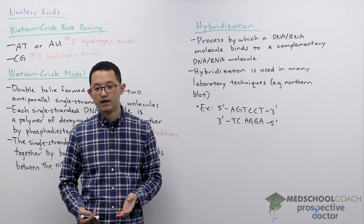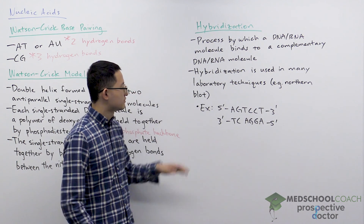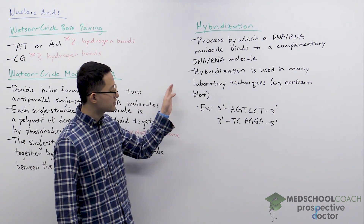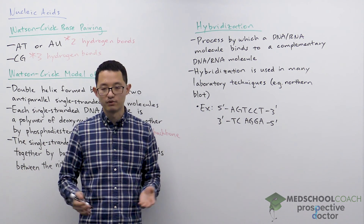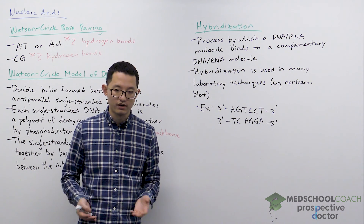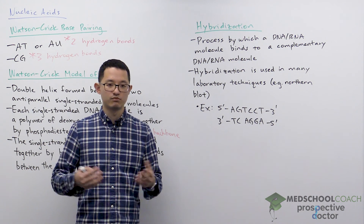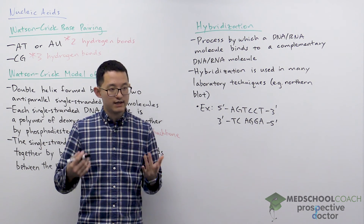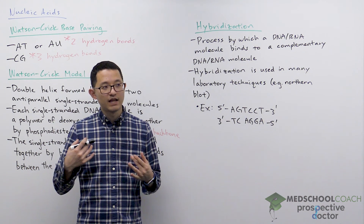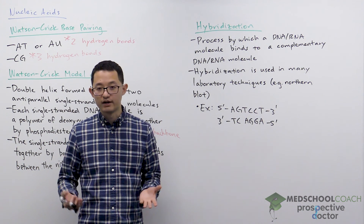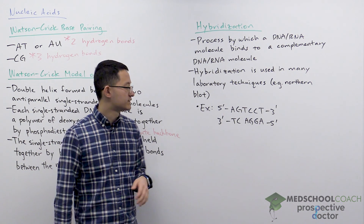Hybridization is important because it is used in many laboratory techniques such as Southern blot, Northern blot, Sanger sequencing, as well as siRNA — small interfering RNAs.